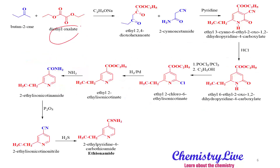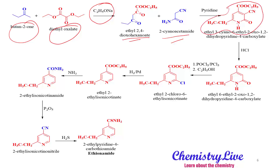In the synthesis, condensation of ethyl dioxalate with C₂H₅ONa and methyl ethyl ketone yields dioxohexanoate. The dioxohexanoate further reacts with 2-cyanoacetamide to produce heterocyclic cyclization, giving an intermediate compound. This compound is then treated with HCl to remove the cyano group.